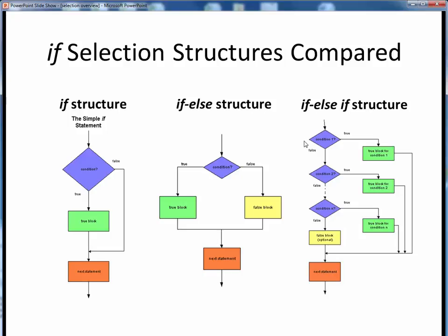All three of these if-selection structures have one thing in common, and that's these condition blocks, shown as blue diamonds. These all represent decision points, and this is where we would use conditions to decide what to do next.